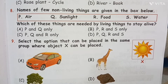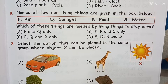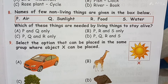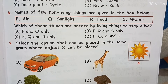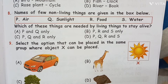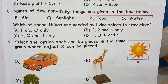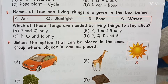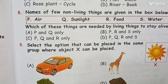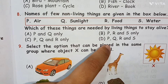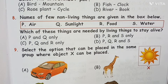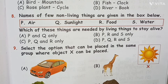Question 8: Names of few non-living things are given — P: air; Q: sunlight or food; S: water. Which of these things are needed by living things to stay alive? The answer is option D — we need all of these to survive.